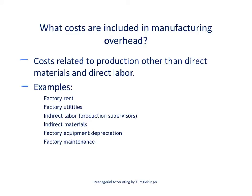Let's start by defining manufacturing overhead costs. These are costs that are related to production other than direct materials and direct labor. Examples include factory rent — the building where we produce our products — and factory utilities, such as electricity used within the manufacturing facility. Indirect labor is also an example: production supervisors who aren't working on specific jobs all day but are moving around the factory making sure everything runs smoothly.